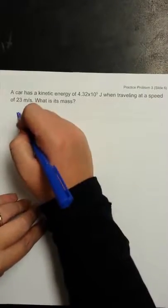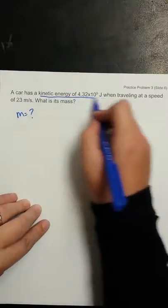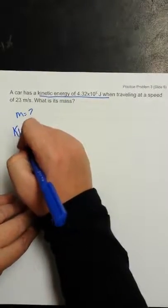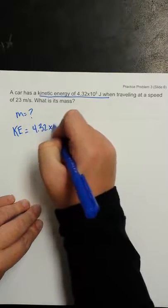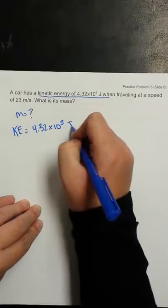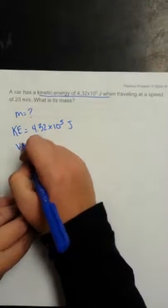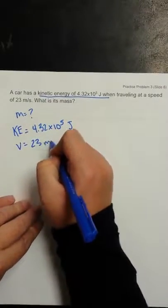Okay, so we know we're looking for the mass. We are given the kinetic energy, so KE is equal to 4.32 times 10 to the fifth joules, and it's got a speed of 23 meters per second.